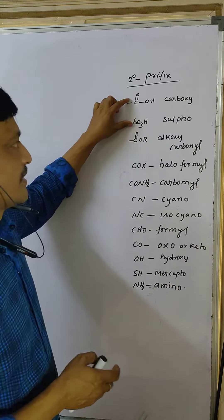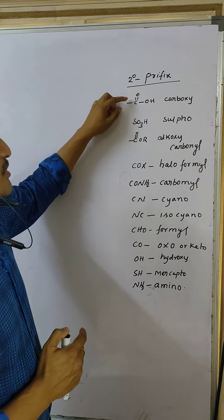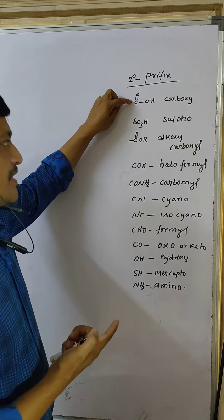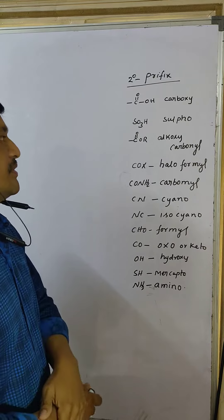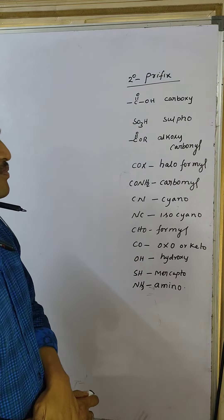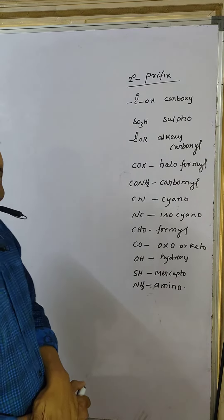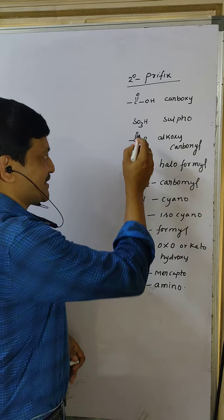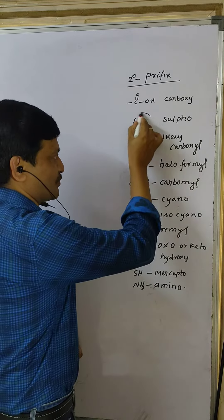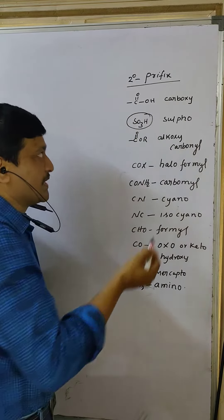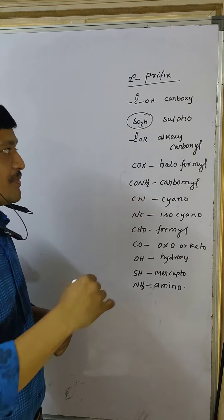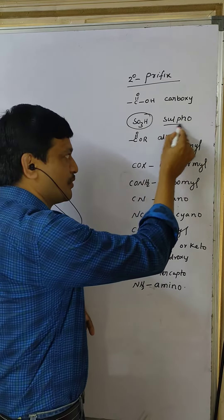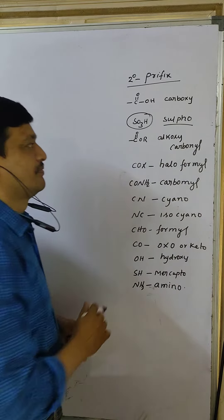these two functional groups are there. First priority is given to carboxylic acid, and second priority is given to SO3H, sulfonic acid. For SO3H, you have to write the secondary prefix. What is the secondary prefix name? It is sulpho.